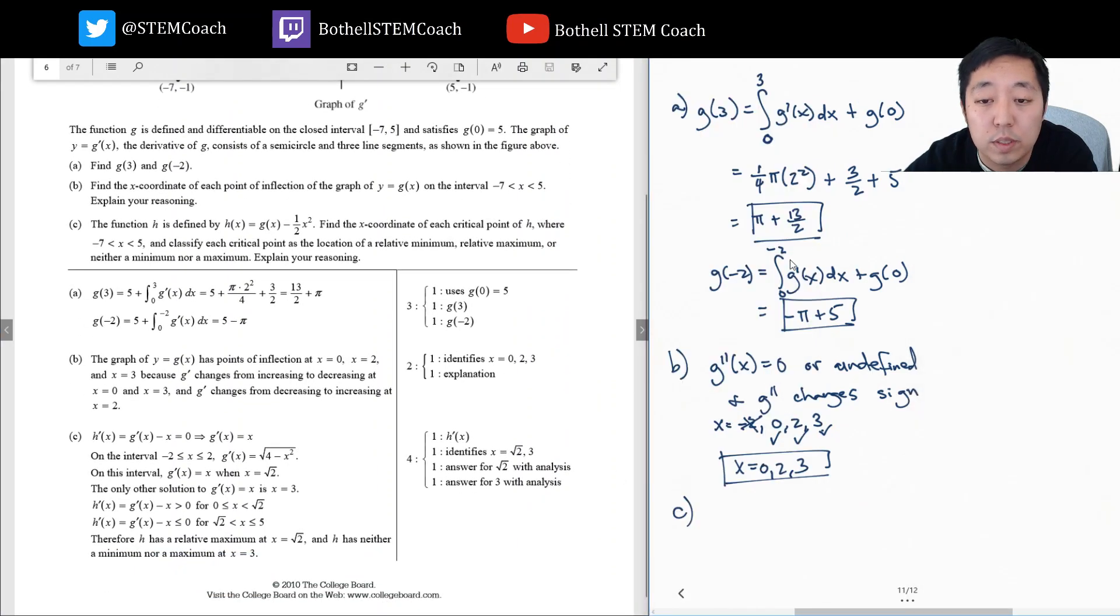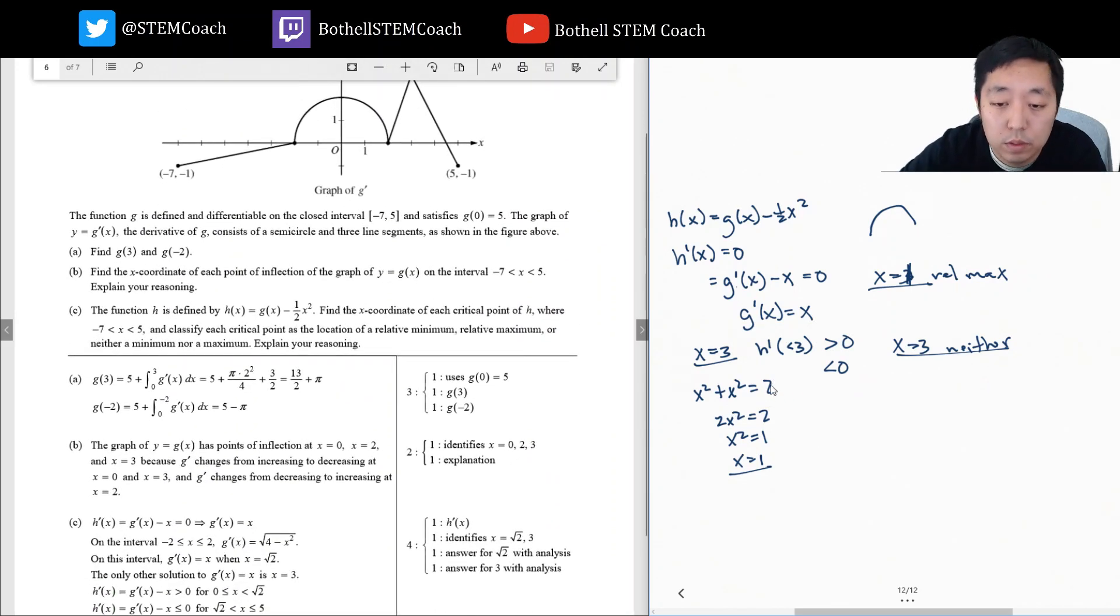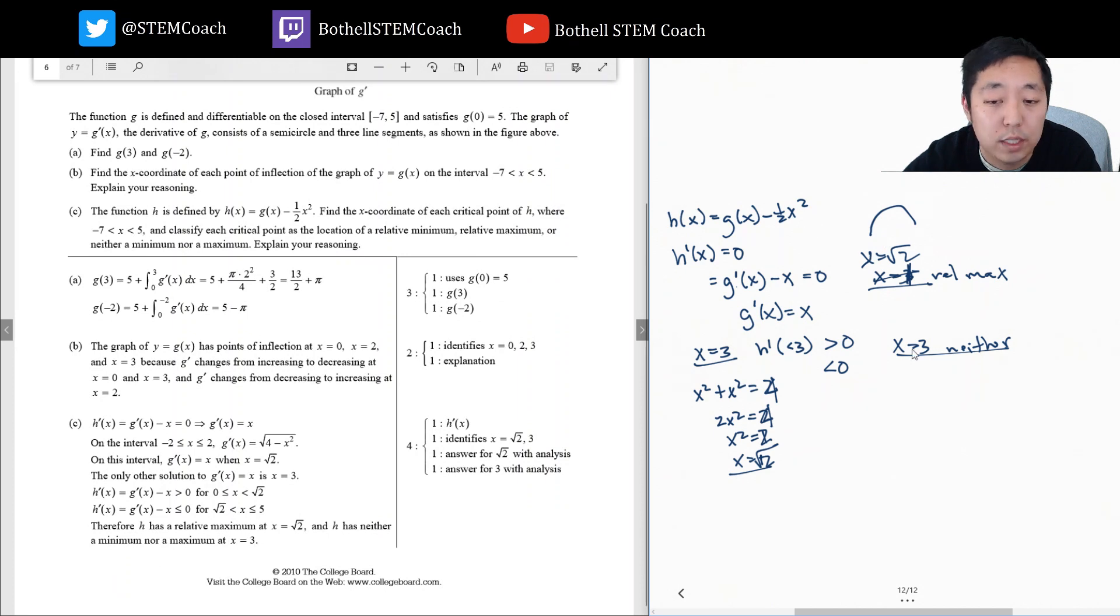Let's take a look at the resulting answers. I got pi, 13 over 2 plus pi, five minus pi, zero two and three because they changed sign. I got root two - I messed it up. This should have been four. It's the equation of a circle with radius two, so this should have been x equals square root of two. I messed up on the computation of the x value, but I justified the correct thing. This one was the relative max and this one was neither.